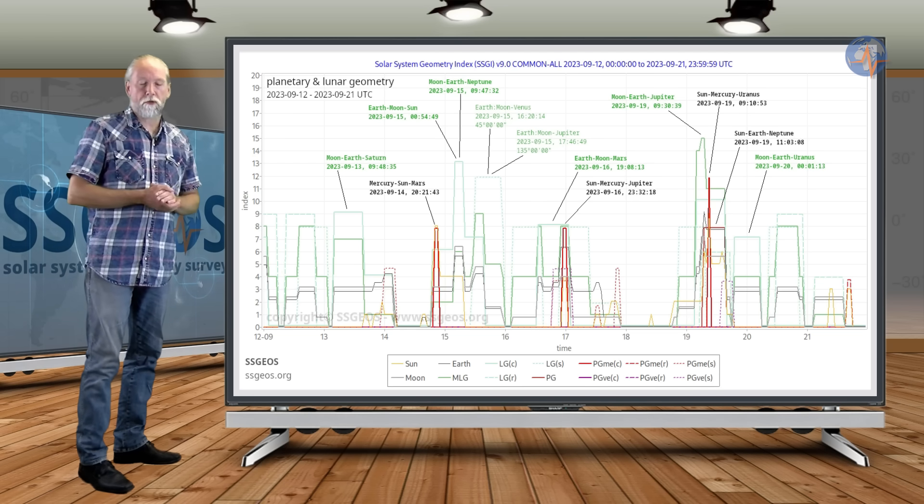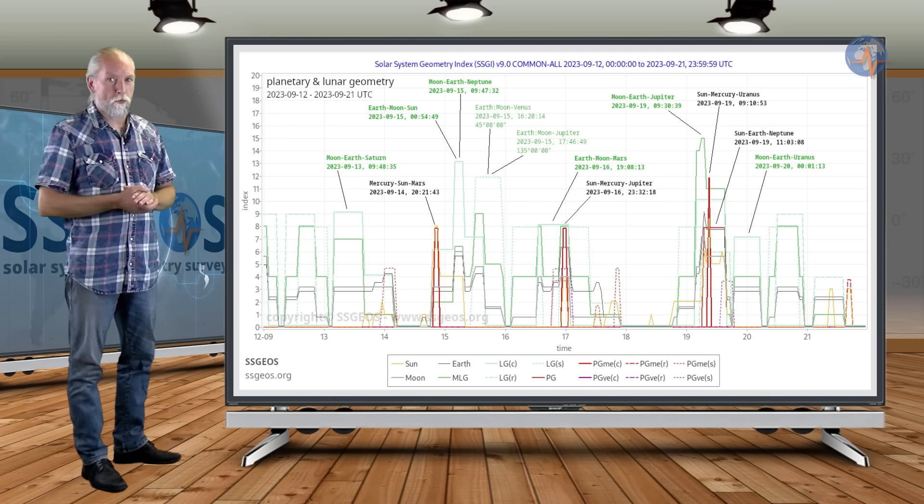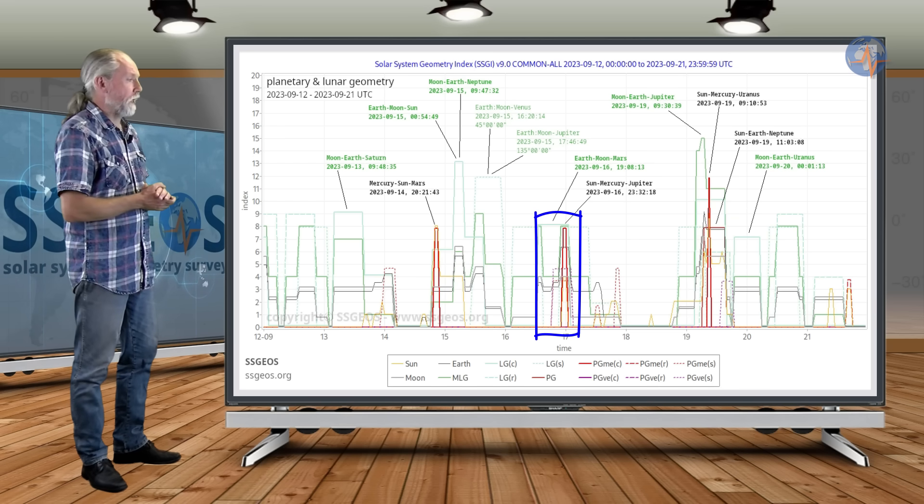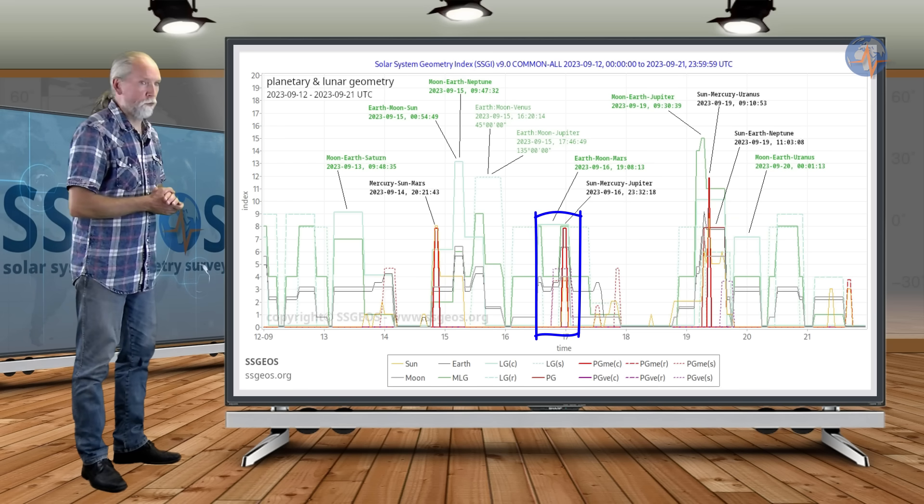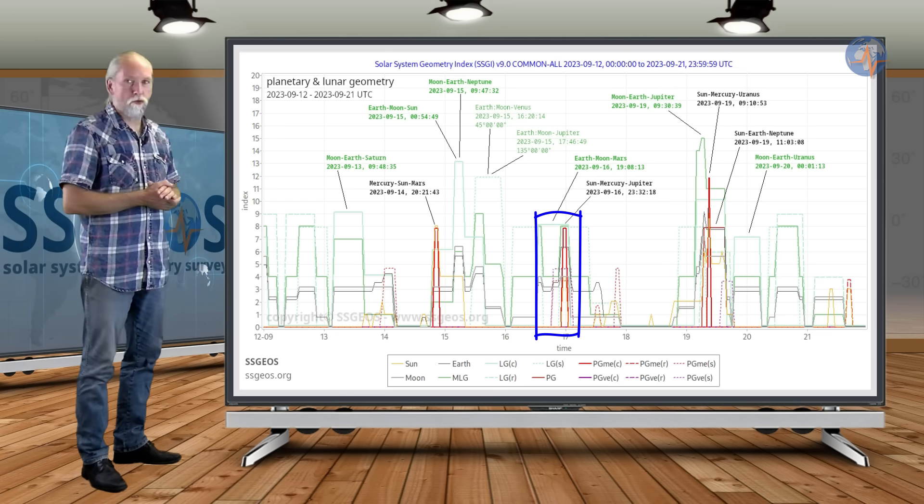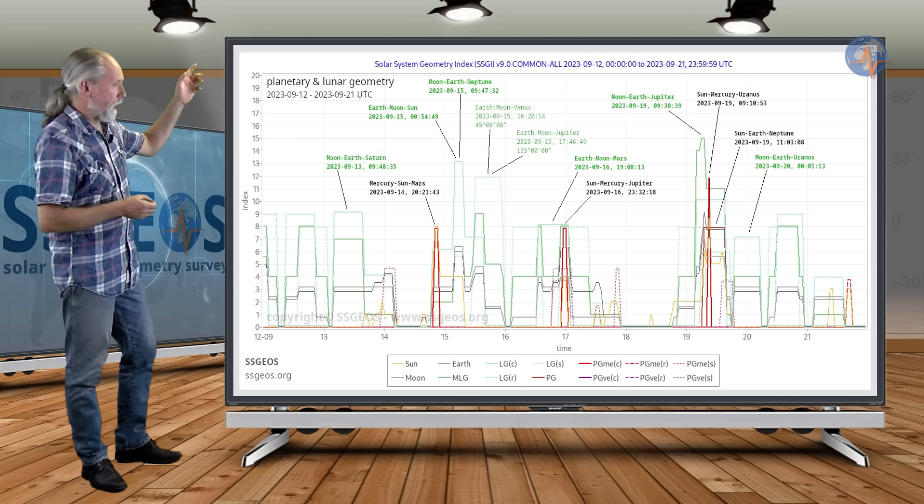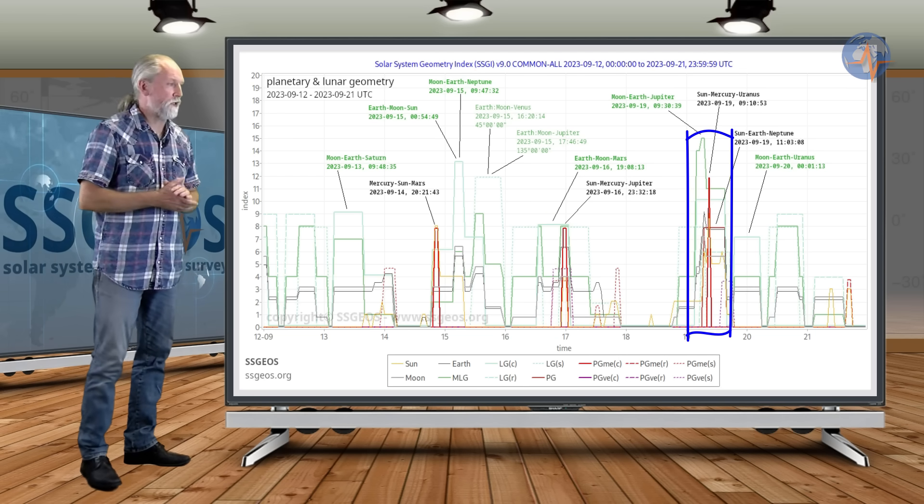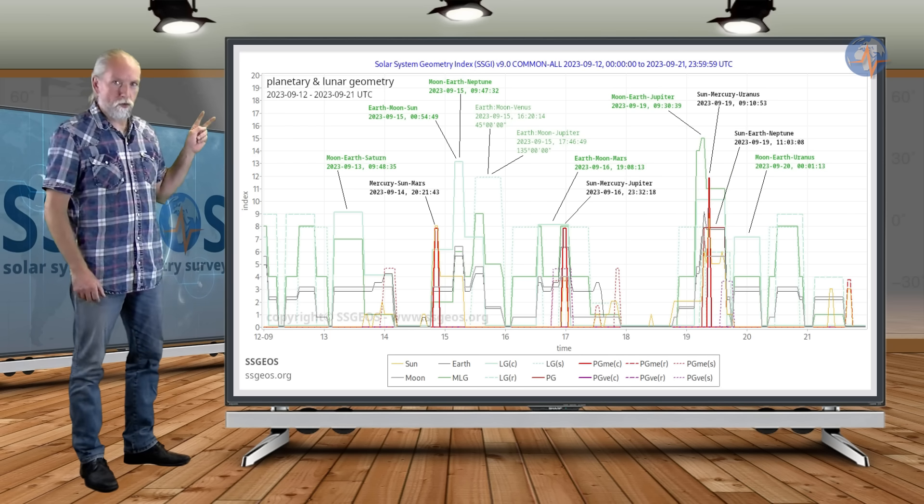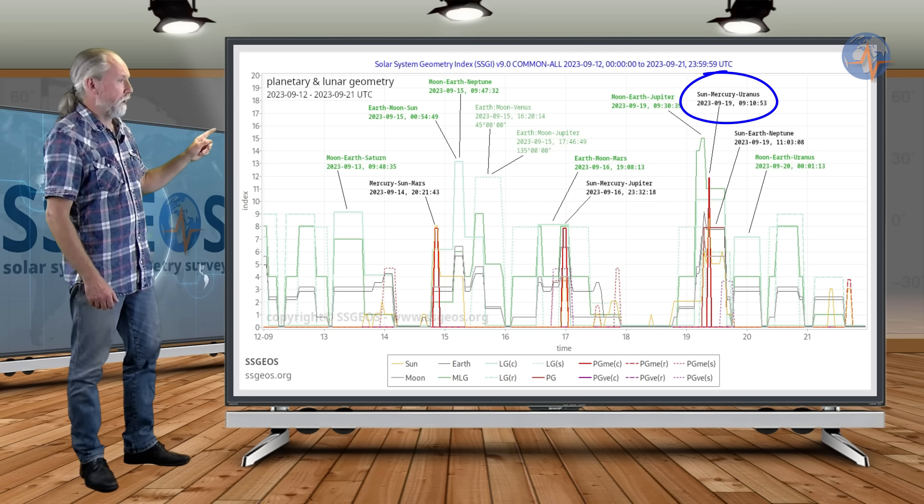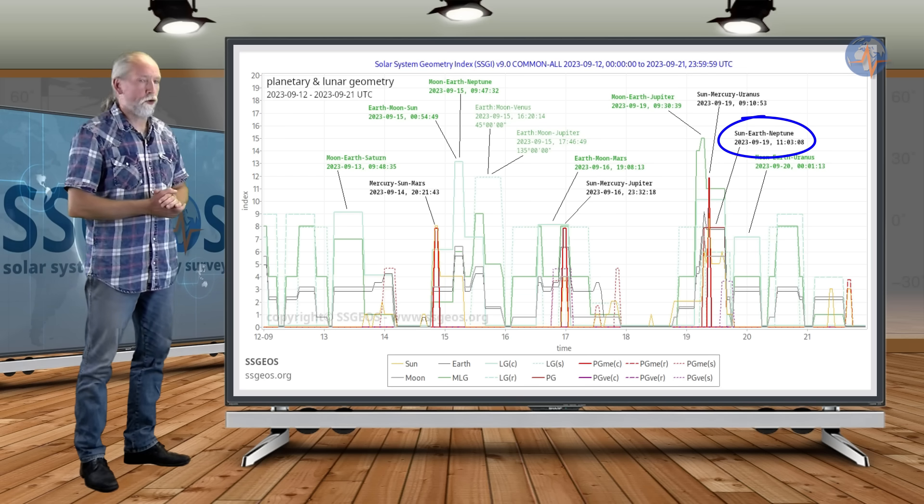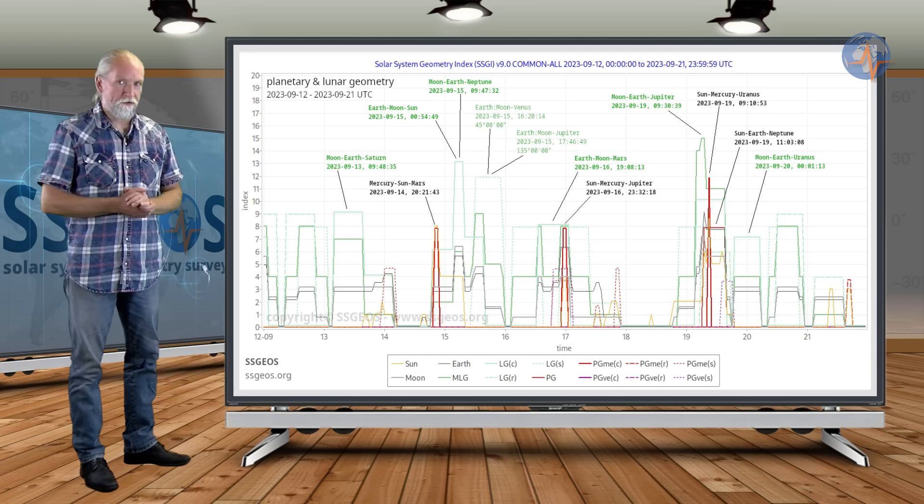It depends on the condition of Earth's crust and the stress levels, and that's the one thing that we cannot measure. Then on the 16th, later on the 16th, we have a planetary conjunction that is Sun-Mercury-Jupiter, in itself not too critical and it will converge more or less with a lunar conjunction with Mars. Then we have a high lunar peak and also a planetary peak converging on the 19th, and I think that that will be more critical. That will be two planetary conjunctions converging, Sun-Mercury-Uranus early in the morning on the 19th, and shortly after followed by Sun-Earth-Neptune.